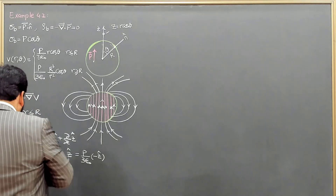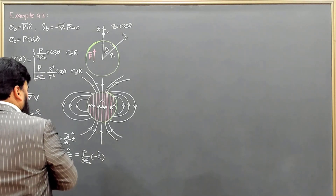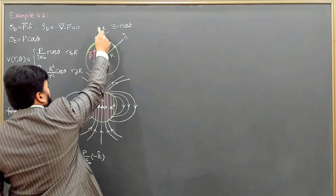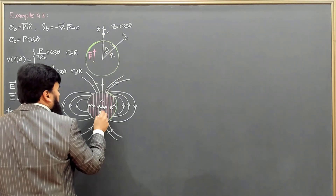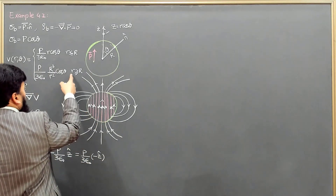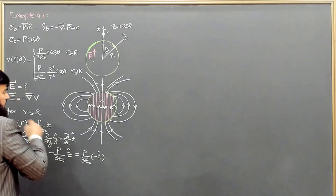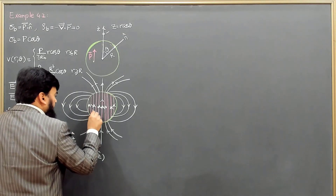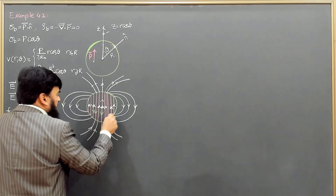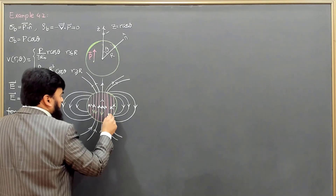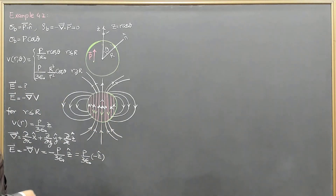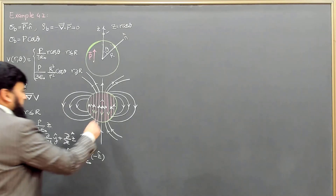So inside the sphere, the electric field is in the minus z-direction. If we take the polarization direction as z-hat, then the field inside points opposite to the polarization. The field direction inside is antiparallel to P.